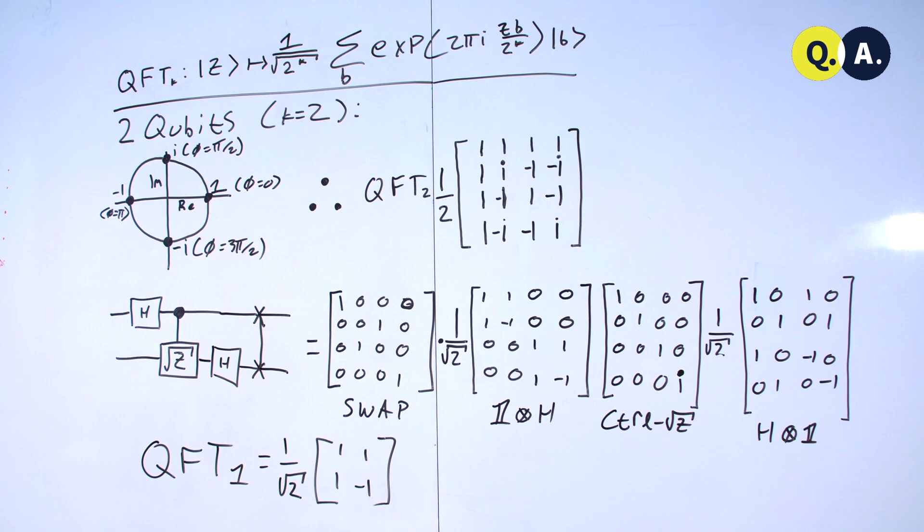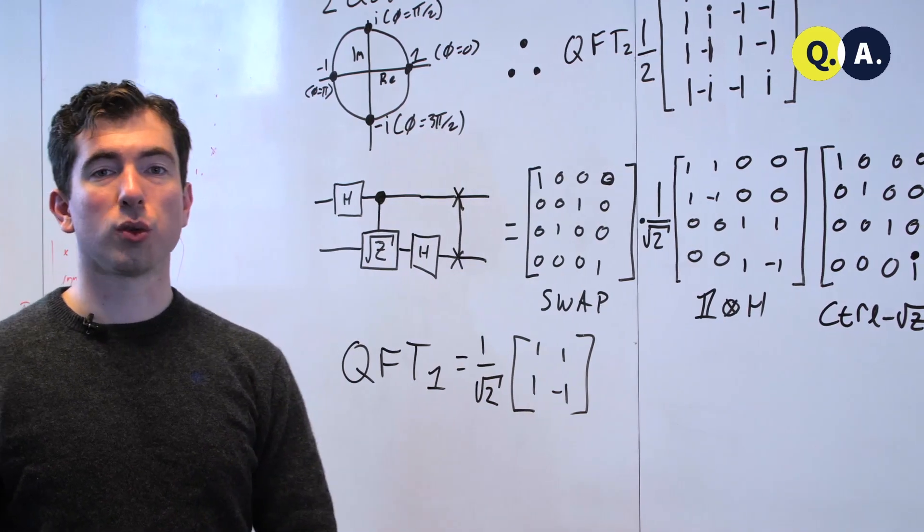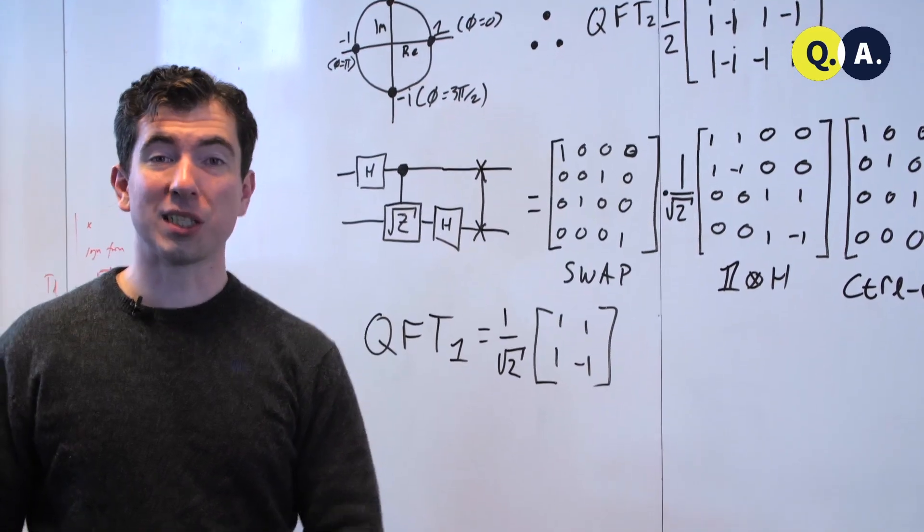I invite you to multiply these four matrices yourself and observe that they do indeed recreate the quantum Fourier transform on two qubits. Now if that's too easy,